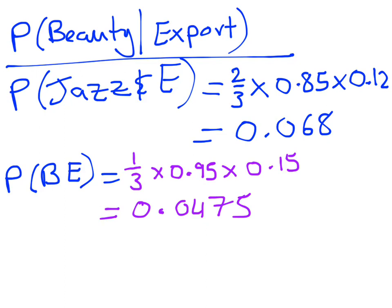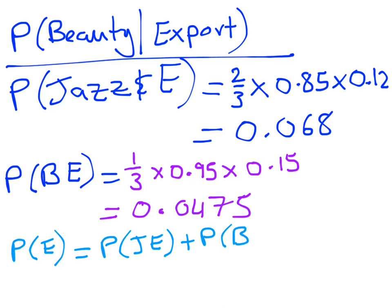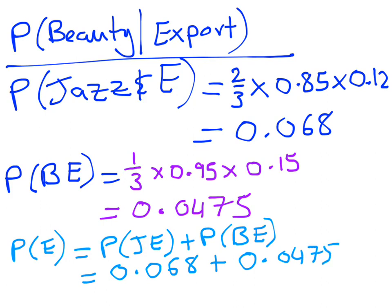Now I can combine both probabilities to find the total probability of any apple being sent for export. Adding the Jazz export probability and the Beauty export probability: 0.068 + 0.0475 = 0.1155. So in total, 11.55% of all apples get sent for export.